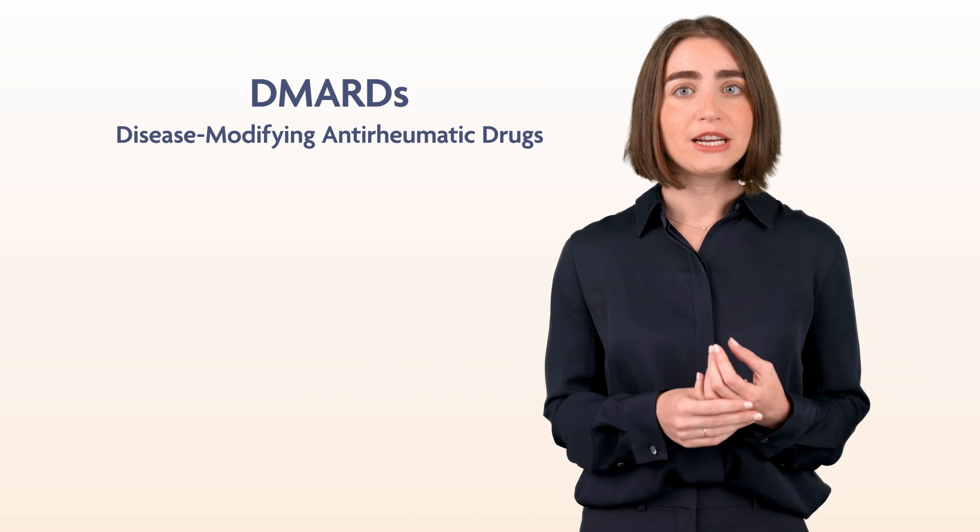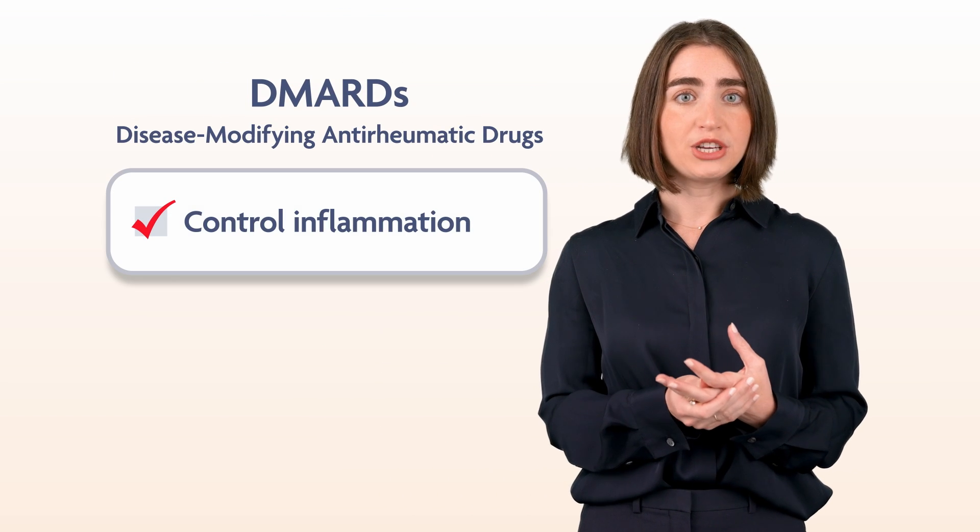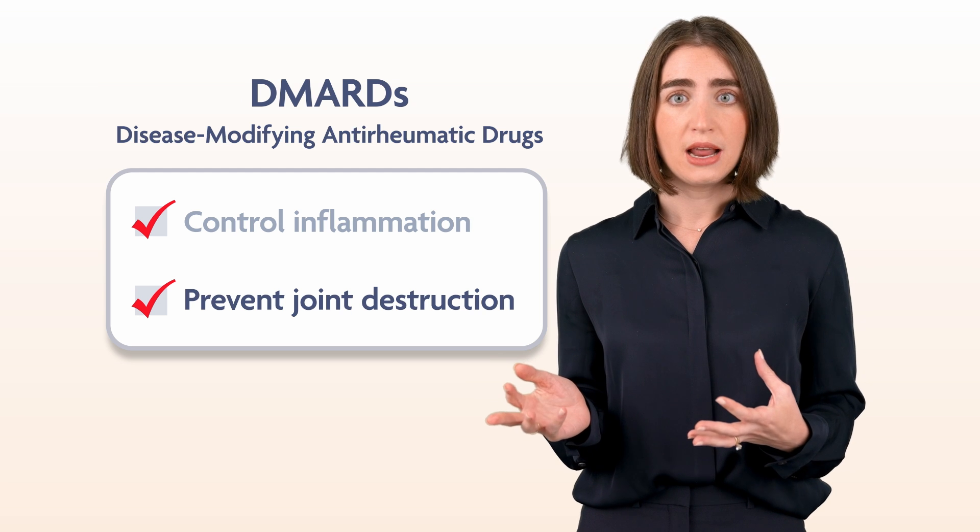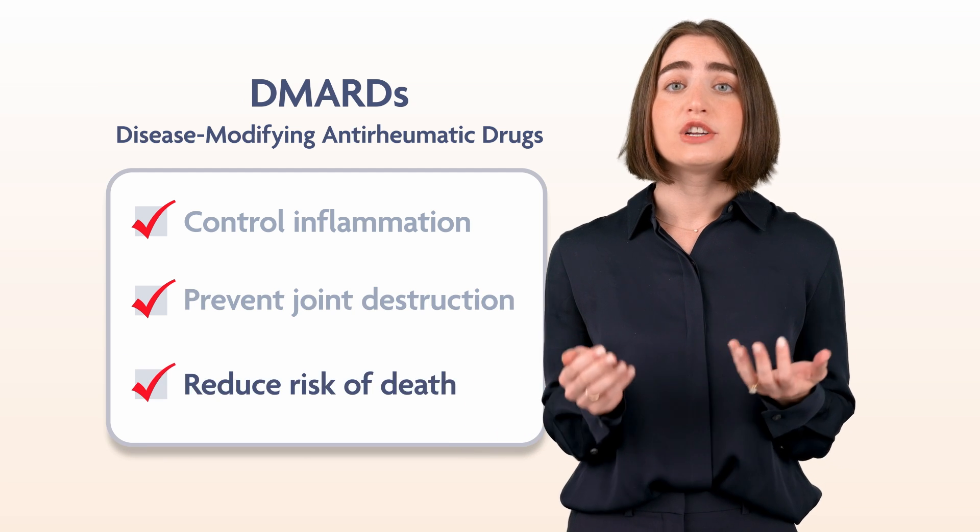We don't always have biomarkers or predictors of what pathway will be driving disease in a given patient. The trick is to get to the point where you have a patient on a medication that addresses their own particular pathogenic mechanism and gets their disease under control rapidly. DMARDs are disease-modifying anti-rheumatic drugs, and they control inflammation, prevent or slow joint destruction, and potentially reduce the risk of death if started early.